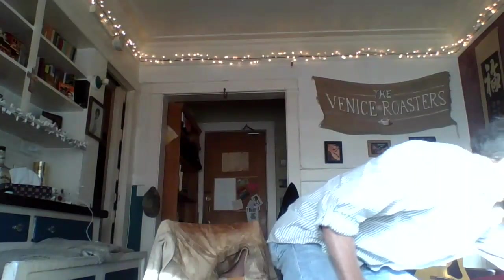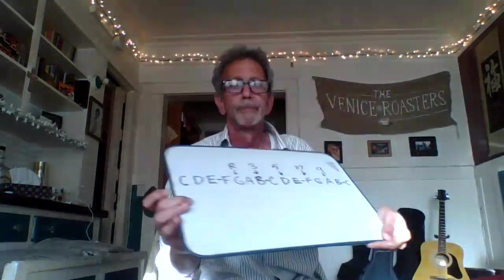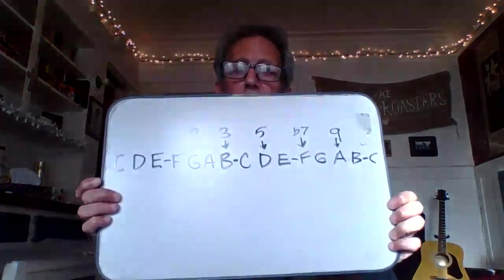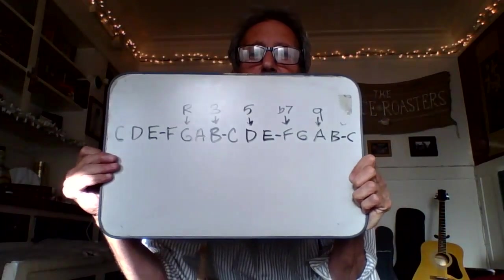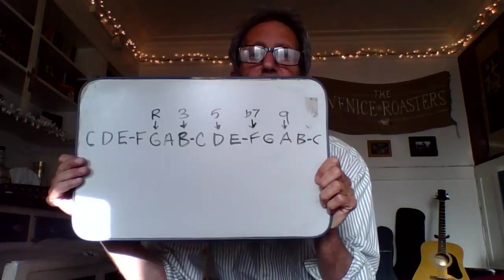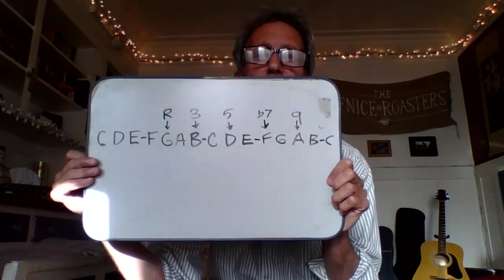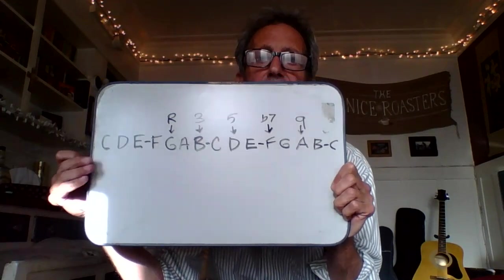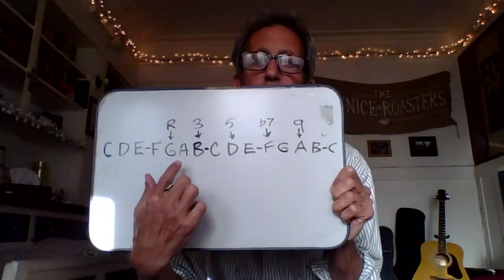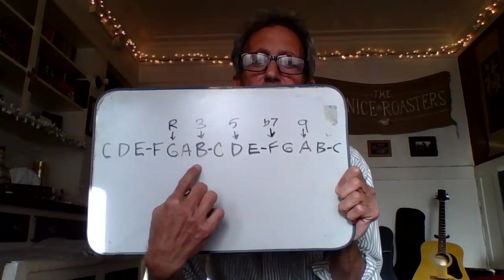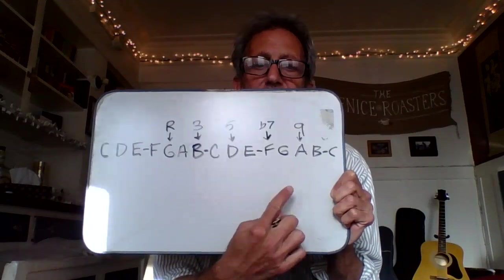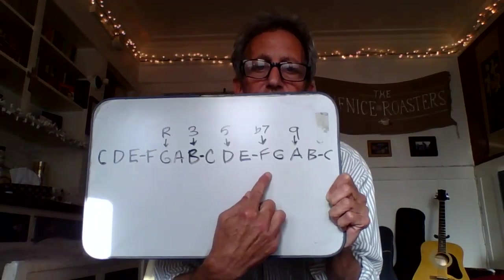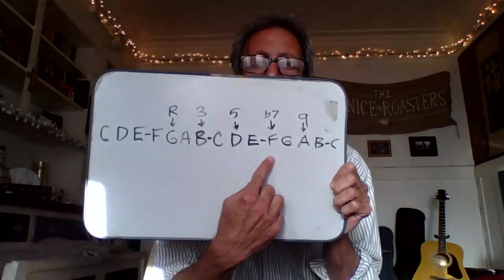For this, we'll go to the key of C. We want to take the dominant seventh chord from the key of C, which would be G7. So we have root, third, fifth, flat seven, nine. And you don't see a flat on that F.